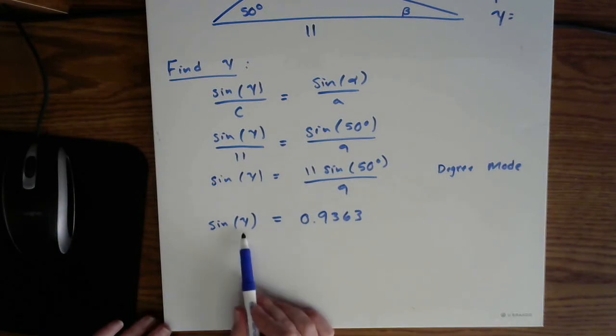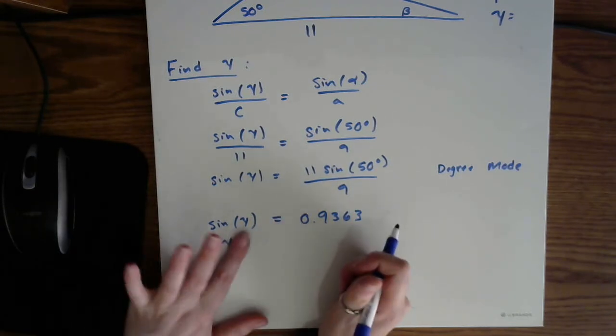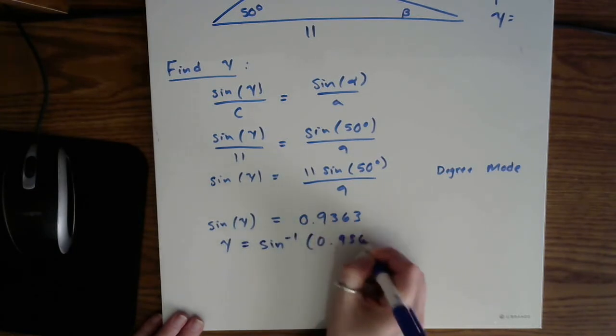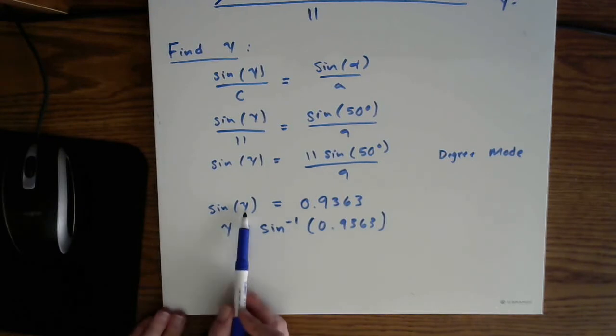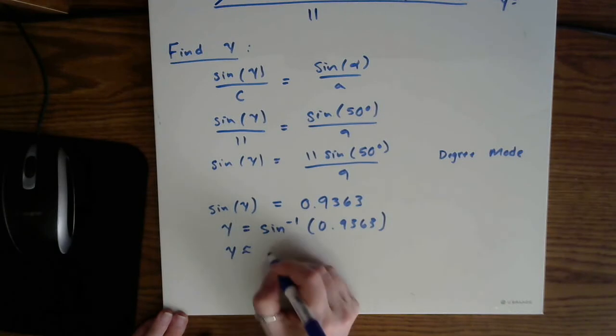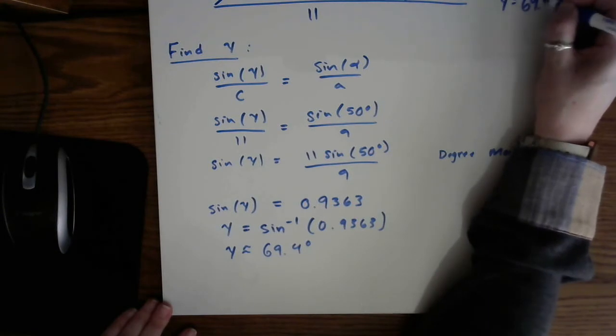Now remember, what we really want is gamma. So to undo the sine function, take sine inverse of both sides. And at some point, let's do this right here. We have sine inverse of 0.9363. So again, we've seen inverses show up quite often. Here is yet one more place where you need a sine inverse. Remember, you're trying to find the angles. So you have to undo the sine function. So plugging that into your calculator yields an approximate angle of 69.4 degrees. So I now know that gamma is 69.4 approximately.